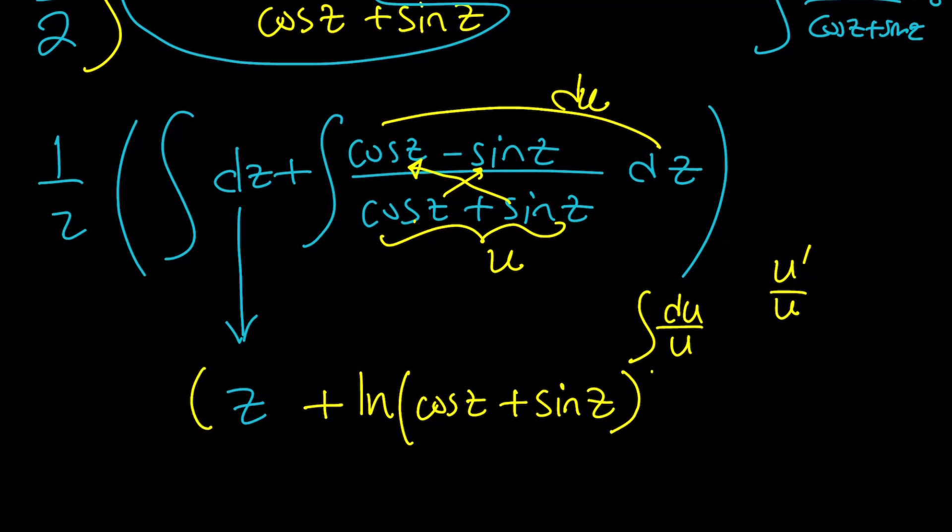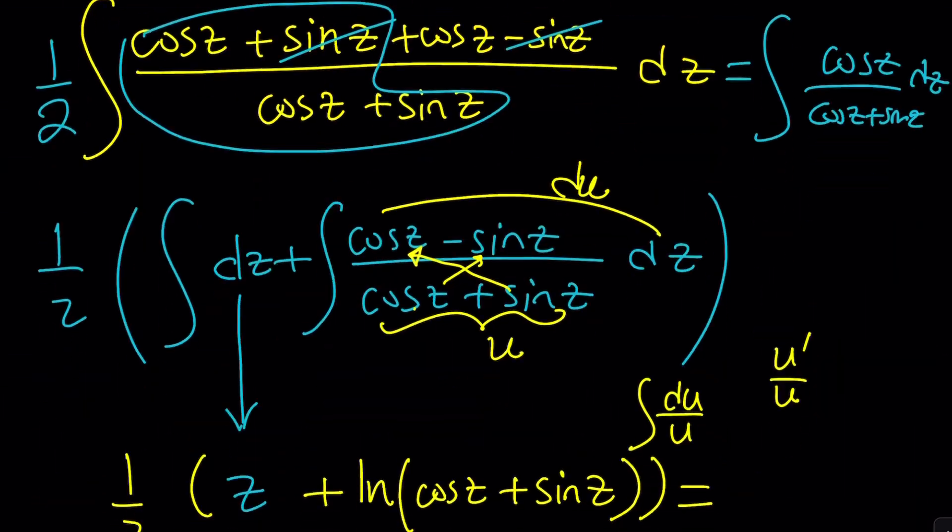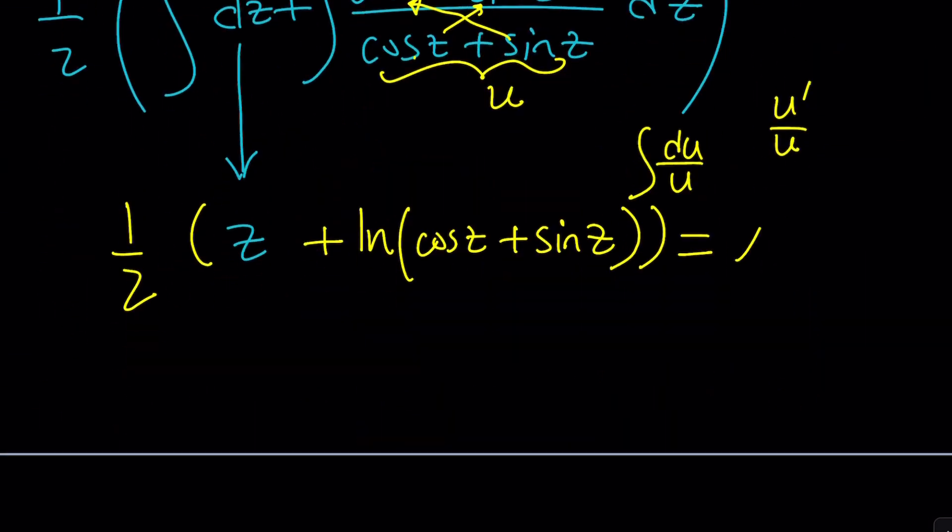Let's put the one half on the outside. And do not forget to put a constant. Wait a minute. We have something else on the right hand side, which is the integral of dx, which is x plus c. So we don't need a constant twice. This is x plus c. And now we have to back substitute.